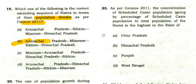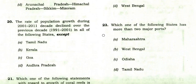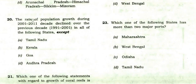This is a tricky question — many people get confused, but Arunachal Pradesh goes first, then Mizoram, then Sikkim. The rate of population growth during 2001–2011 declined over the previous decade in all states except — the right option is Kerala; in Kerala it did not decline.